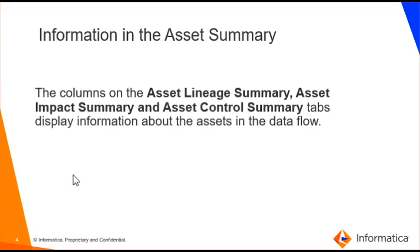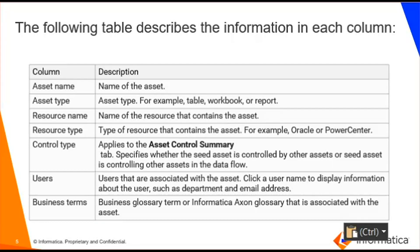The three tabs are named as the asset lineage summary, the asset impact summary, and the asset control summary. The columns on these three tabs display information about the assets in the data flow.